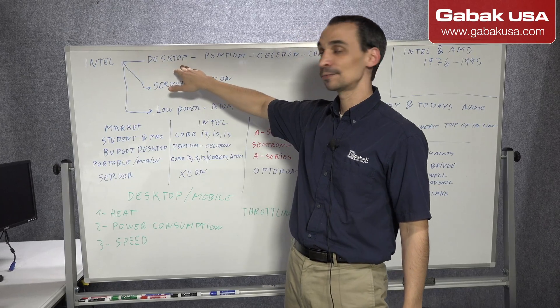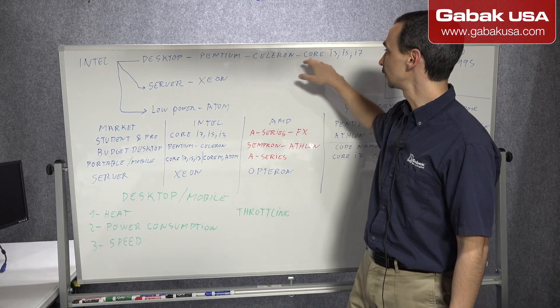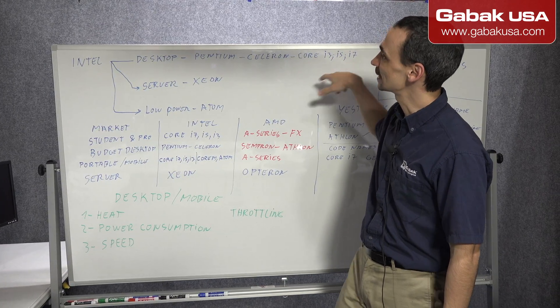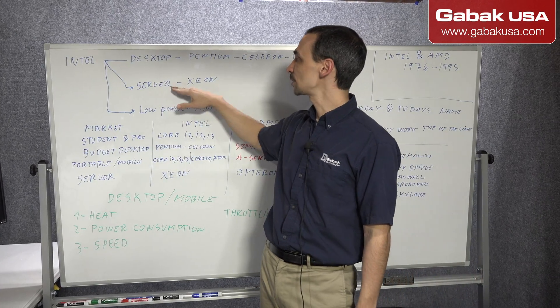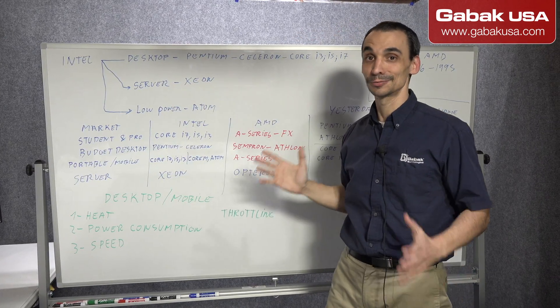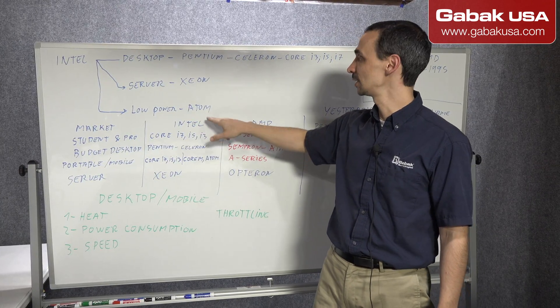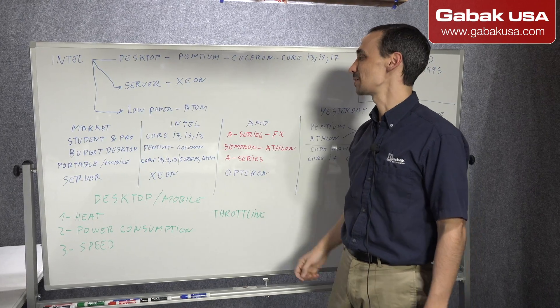So in this case, we have the desktop processor. We have Pentium, Celeron, Core i3, i5 and i7. That is, of course, for desktop computers. And here for server, we have Xeon. That is for servers, basically. And here we have the lower, the low power consumption is the Atom. So that is the crappy CPU.